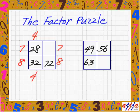8 times what is 72? Which is 9. So that means automatically 9 right there. So 7 times 9? 63. Fantastic.